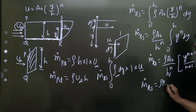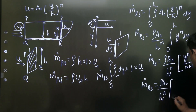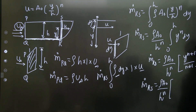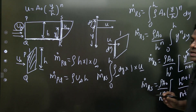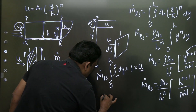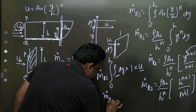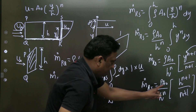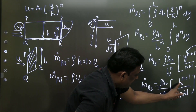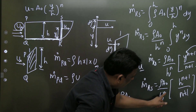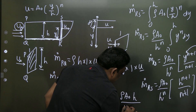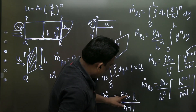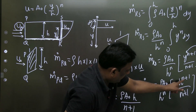Substituting the limits, the upper limit gives h^(n+1) and lower limit is zero. Since h^n in numerator and denominator cancel, the mass flow rate through RS simplifies to ρ·a₀·h/(n+1).